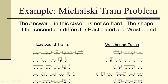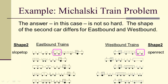Given that simpler question, the answer is yes, and in fact it's not really all that difficult. All we have to do is look at the shape of the second car. For eastbound, we have a slope top as the second car back from the engine. For westbound, we have an open rectangle as the second car back. Likewise, we have an open trapezoid as the second car back and a U-shaped as the second car back for the westbound. Notice that slope top and open trap occur only for eastbound, and open rectangle and U-shaped only for westbound.